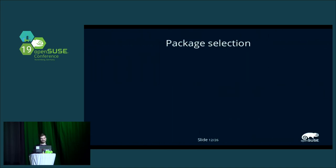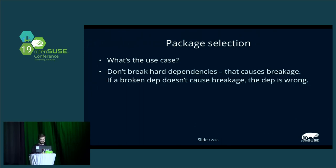The most important part of the image building process is the package selection. First, you have to be sure that you actually know the use case of the image. If you don't know what the image is used for, you can't do a reliable and useful package selection. If you aren't sure whether a package should be included, redefine your use case — maybe you should build two images for two different use cases if they are too different. It is also important to not break hard dependencies. If you want to install package A but package A depends on package B and you don't want B, that doesn't work. If there is a use case where you install a package but ignore hard dependencies, that's a sign the dependency should be replaced by a soft dependency like recommends.